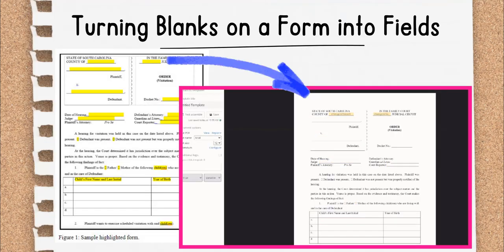The first step in turning a paper form into an automated form is to gather the target form and identify all the blanks that an end user would need to complete. Take a highlighter, either a physical one if you have the paper form in front of you, or a digital one if you're using a PDF, and highlight all the blanks on the form that an end user could possibly need to complete.